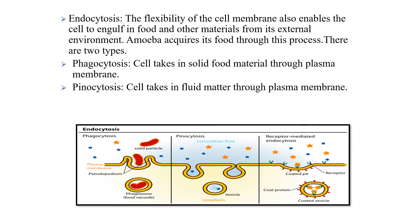Endocytosis. Endo means inside. Amoeba acquires its food through this process because the cell membrane is flexible in nature. With the help of pseudopodia, it can engulf food material from the external environment to inside. There are two types of endocytosis: phagocytosis and pinocytosis. Phagocytosis means solid food material is taken inside. Pinocytosis means fluid material is taken inside. In this diagram, you can see that — the solid food material taken inside is phagocytosis, and the liquid material shown in blue taken inside is pinocytosis.